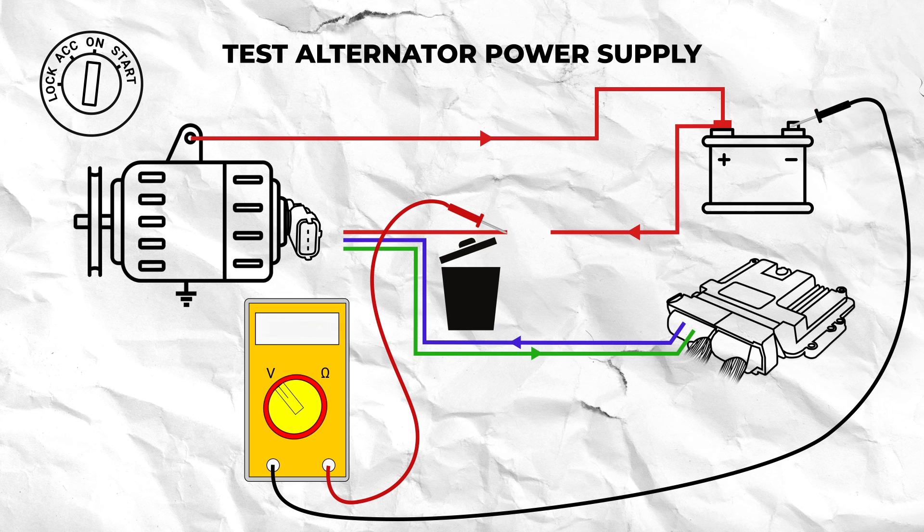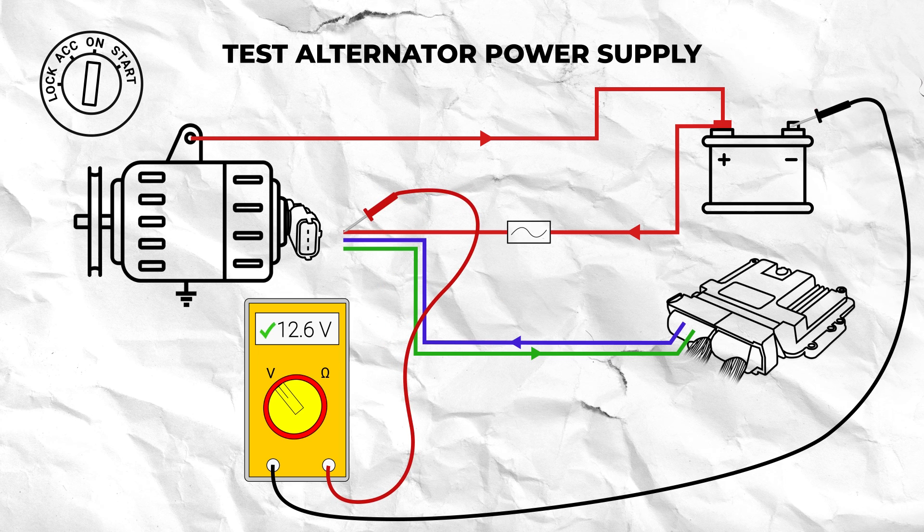If you have no voltage at the fuse then simply replace the fuse, retest at the connector and then reconnect everything and re-scan for codes.